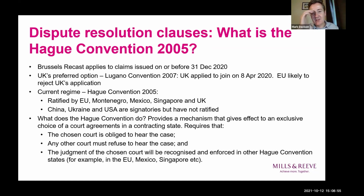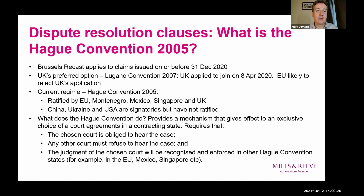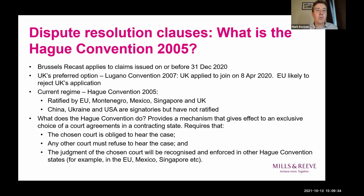As a quick refresher, the old regime was that the UK was part of the Brussels Recast regime. That regime continued to apply for any cases filed in the UK courts before the 31st of December 2020. Simply put, the Brussels Recast regime meant that EU and UK courts would stay any proceedings brought in the wrong court, contrary to what was specified in a dispute resolution clause, and it allowed for the reciprocal enforcement of each other's judgments.